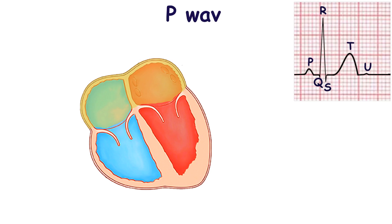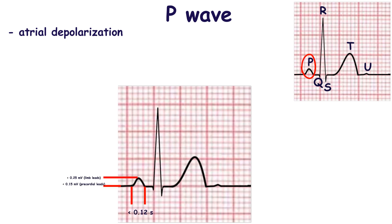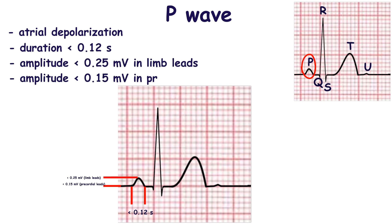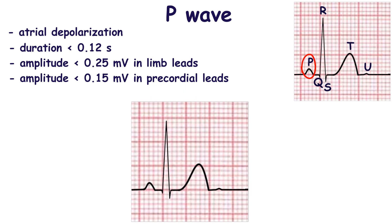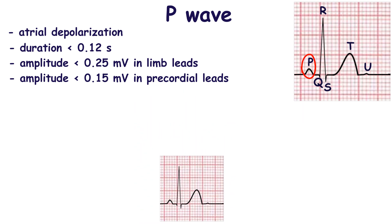The P wave represents atrial depolarization. It is best evaluated in lead 2. Normally, the P wave duration is less than 0.12 seconds and the amplitude is less than 0.25 mV in the limb leads and 0.15 mV in the precordial leads.